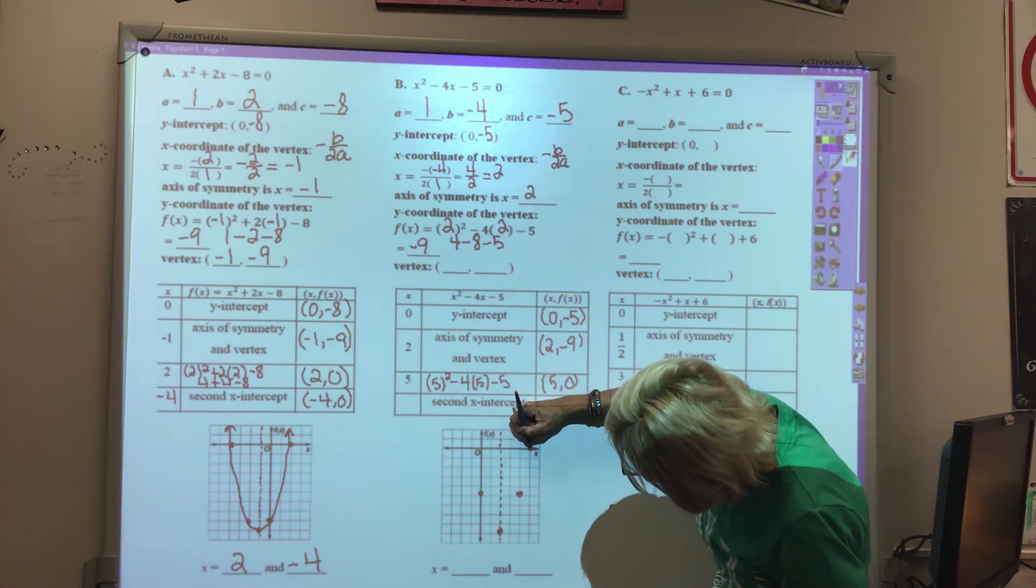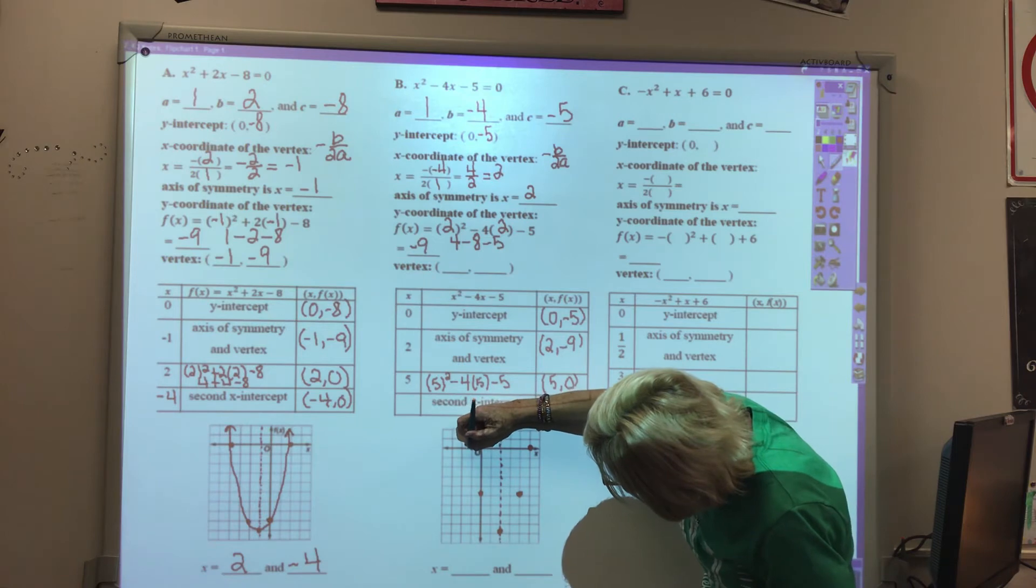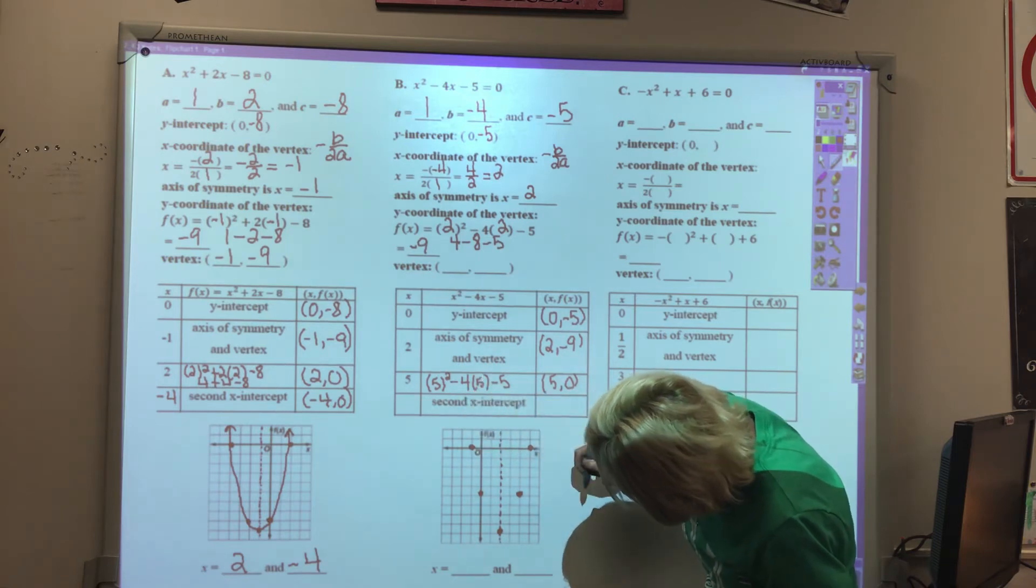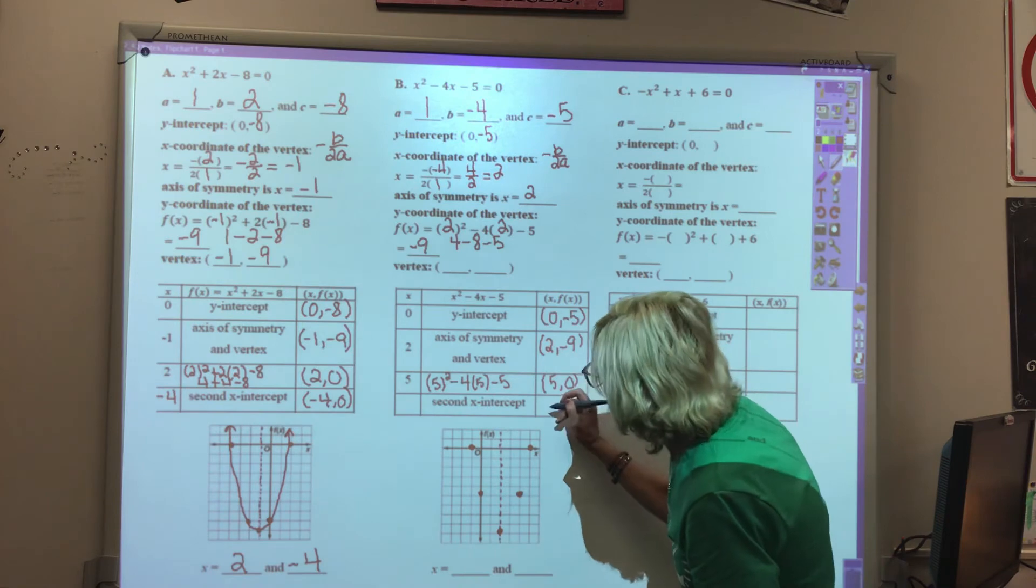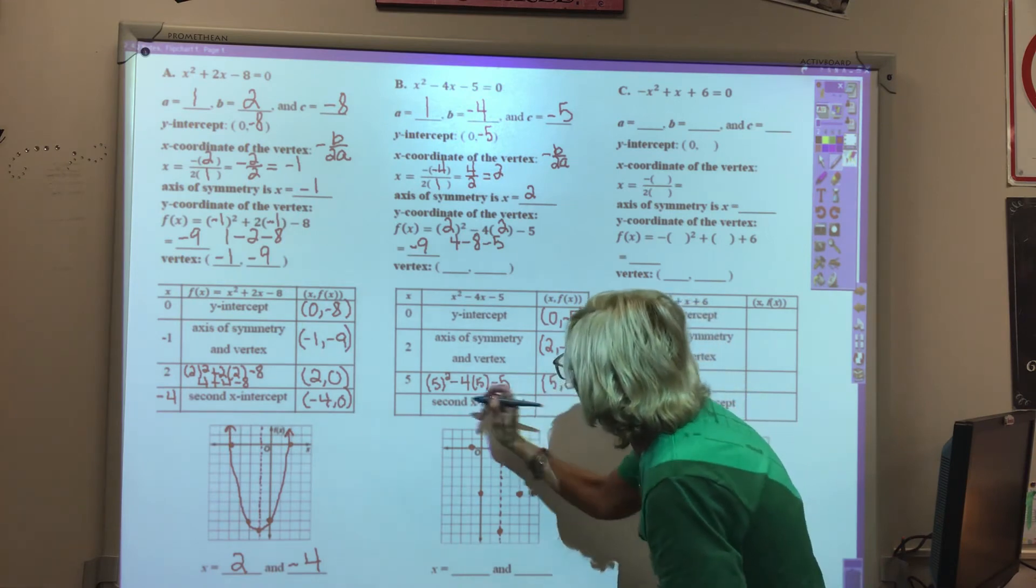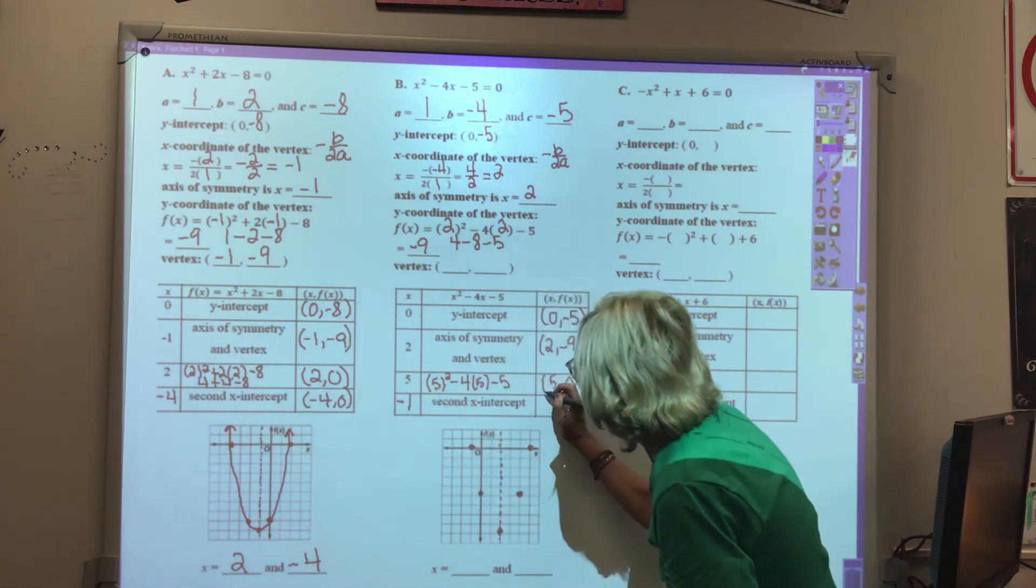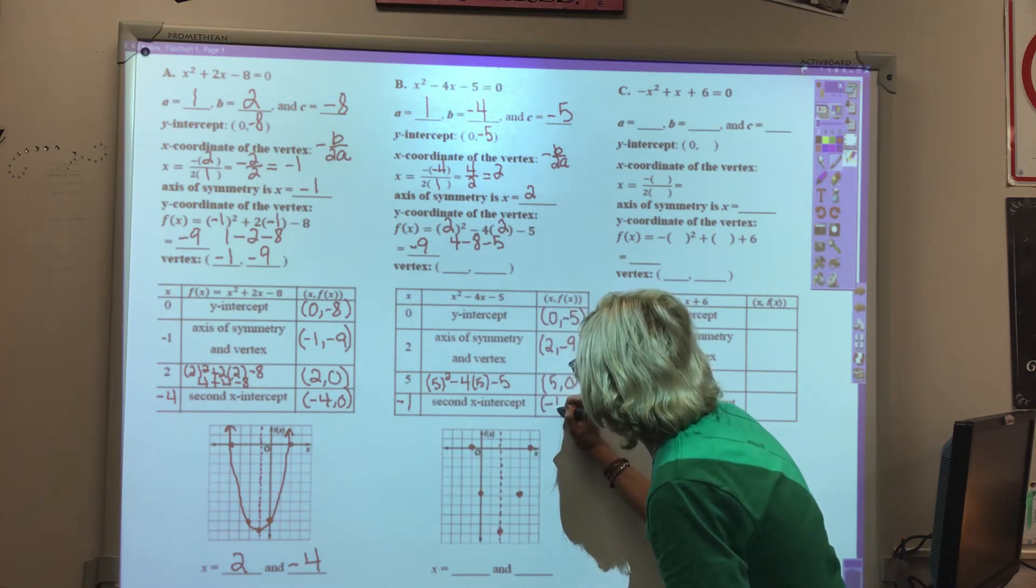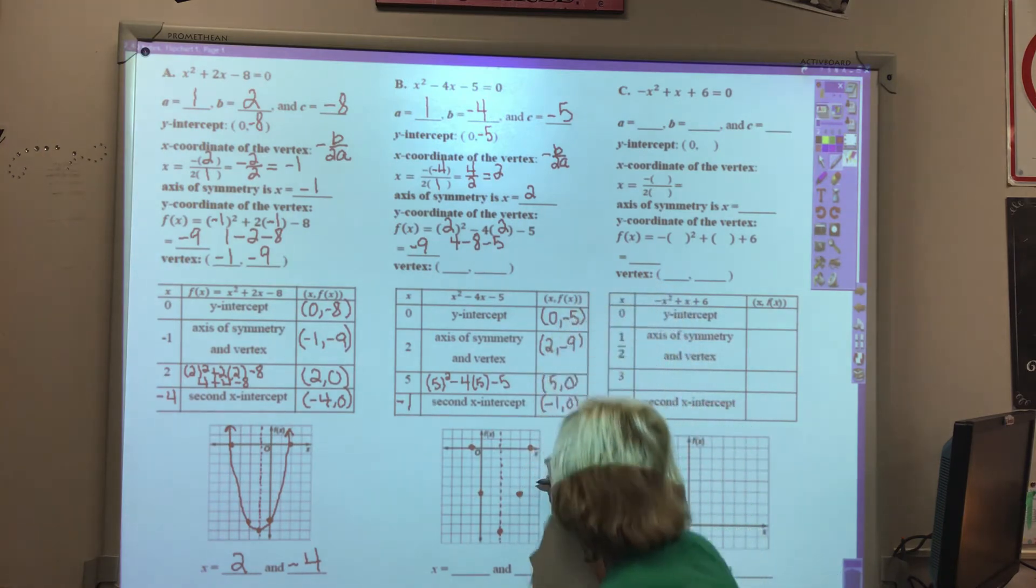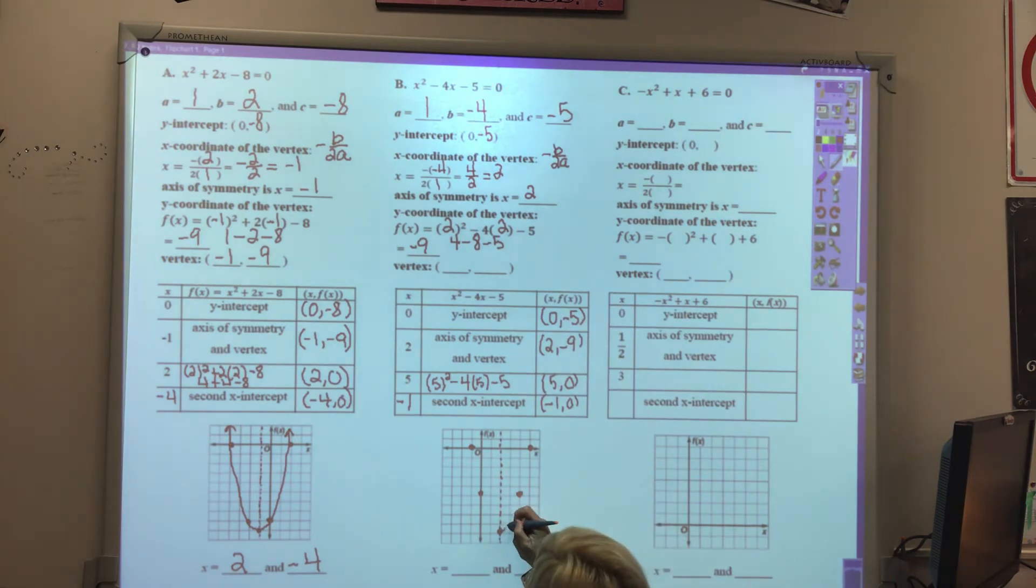We're 3 away from the axis of symmetry to the right. Let's go 3 away to the left. That would be x equals negative 1. So the other x-intercept is negative 1, 0. We'll graph the function, and our two solutions are where we're crossing the x-axis, which was at 5 and negative 1.